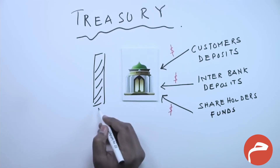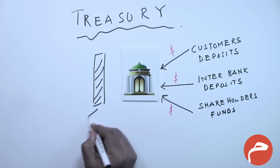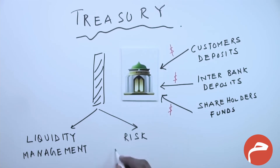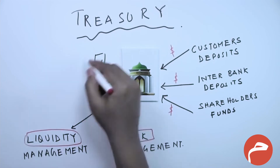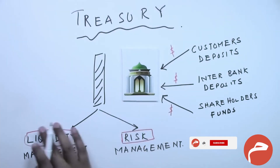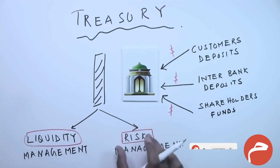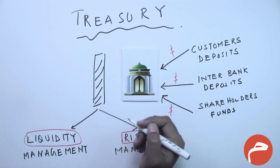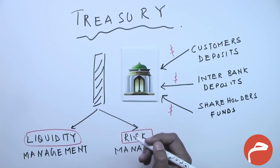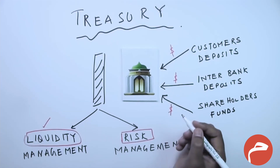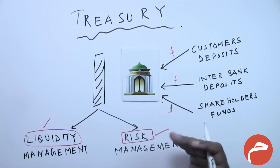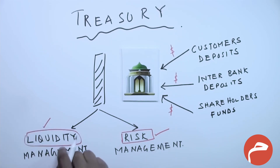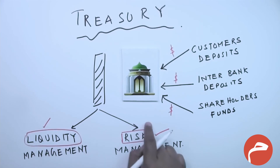The two main responsibilities of the Treasury Department of any bank, and specifically an Islamic bank, are: number one, liquidity management, and number two, risk management. To fulfill these responsibilities, various instruments have been structured for liquidity placement and to mitigate risk. In this lesson, we will discuss the products specifically designed to address liquidity management issues and also the products designed to mitigate risk.